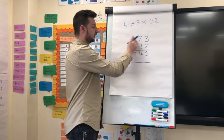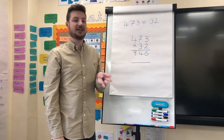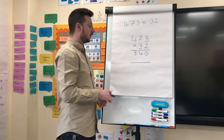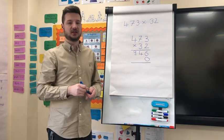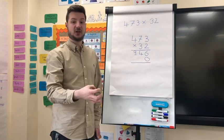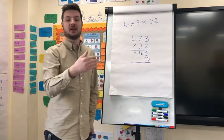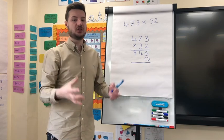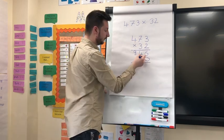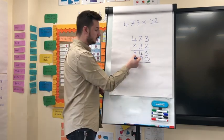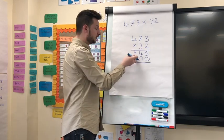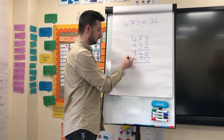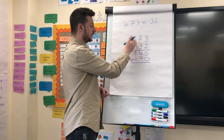The next step is to multiply 3 by 473. Now this 3 is not a 3 — it's in the tens column, so it represents 30. We are doing 473 multiplied by 30. To show this, we first write a 0 in the ones column, which ensures this 3 represents 30 rather than 3. Then we multiply as before: 3 times 3 is 9; 3 times 7 is 21, so put the 1 and carry the 2; 3 times 4 is 12, add the 2 gives 14. And there we have 30 multiplied by 473.